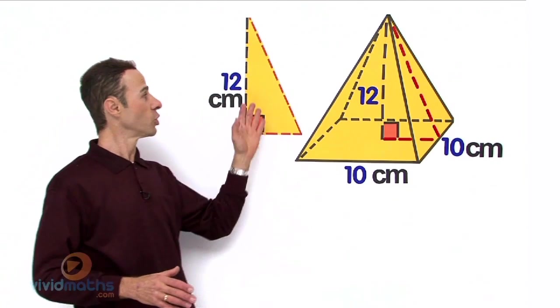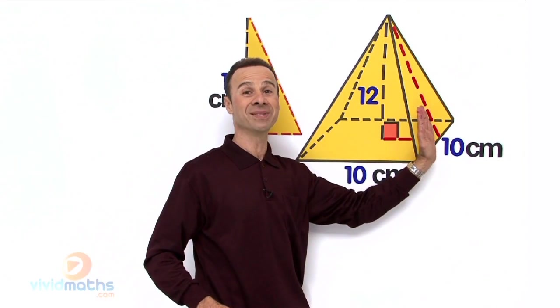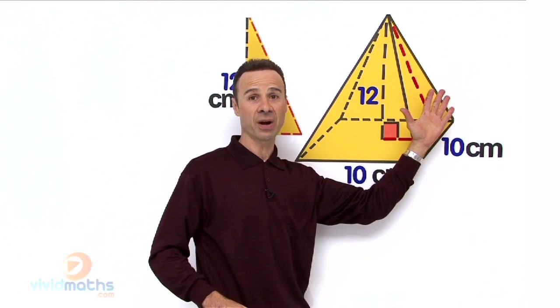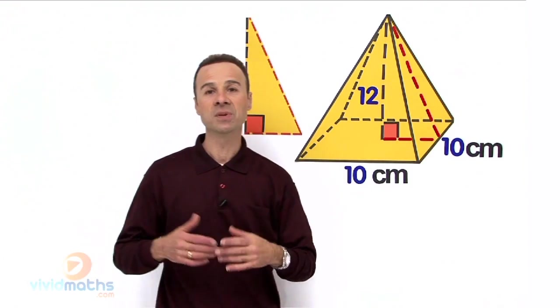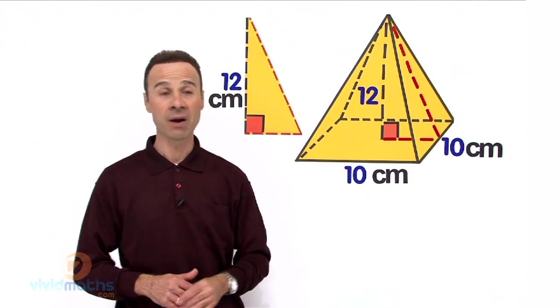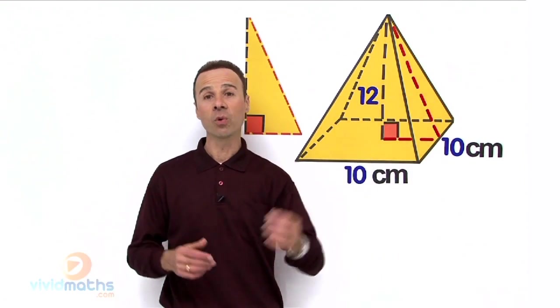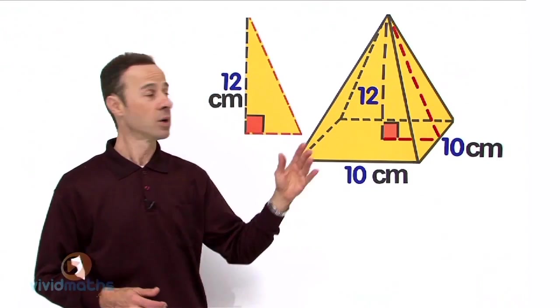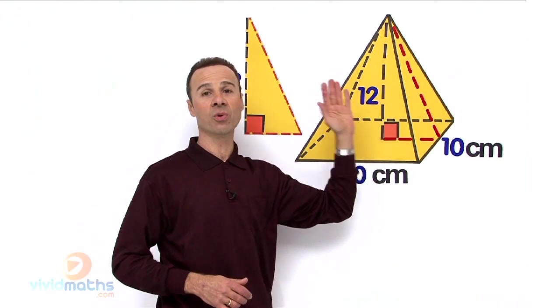After that, we are going to actually use that slant height because that becomes the vertical perpendicular height of that face, of that triangle. We're going to use half times base times height to work out the area of that face. Then all we need to do is multiply that by 4 because there are 4 triangle faces all the way around.